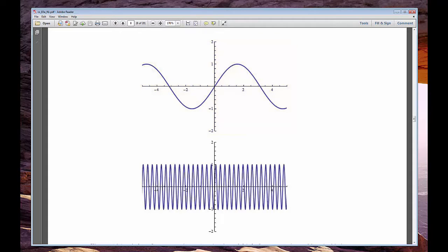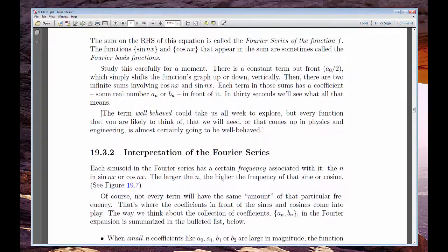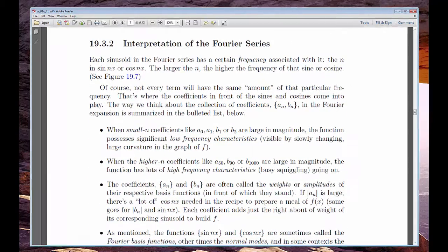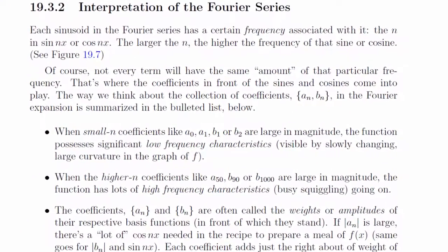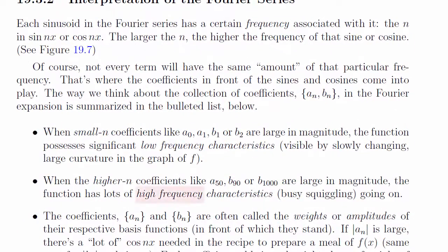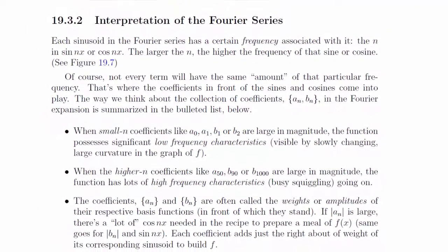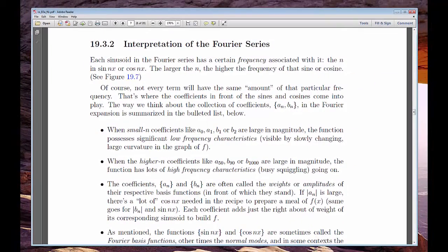While other functions need larger doses of sine 20x or cosine 600x. The former sinusoids are considered low frequency components, and the latter are called high frequency components. If the function we're trying to build has a lot of squiggling going on, we'll need larger doses of the high frequencies. Their coefficients will be larger. If the function is very slow moving, we'll need larger doses of the low frequencies. This is an oversimplification and has to be qualified with many details that you'll read about, but that's the big idea.